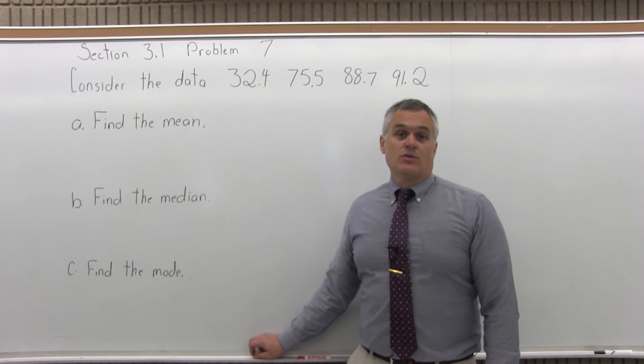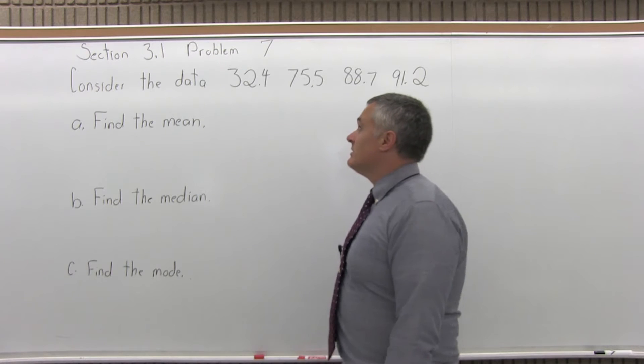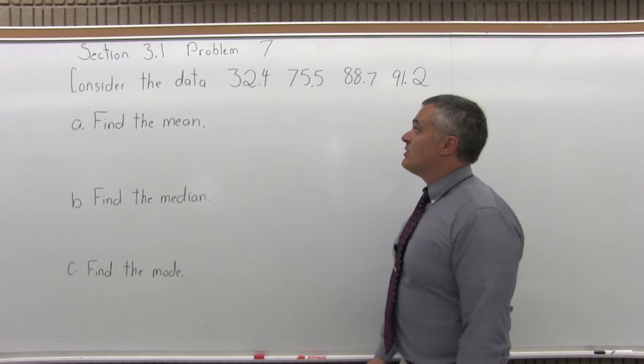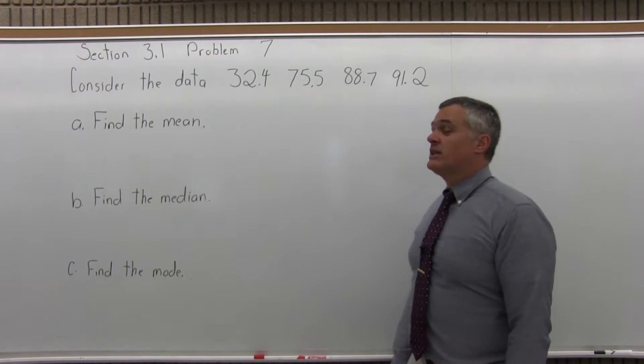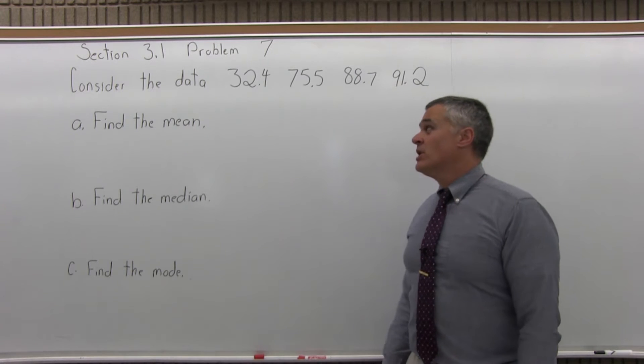This is Section 3.1, Problem 7. It says, consider the data 32.4, 75.5, 88.7, 91.2. Find the mean, find the median, and find the mode.